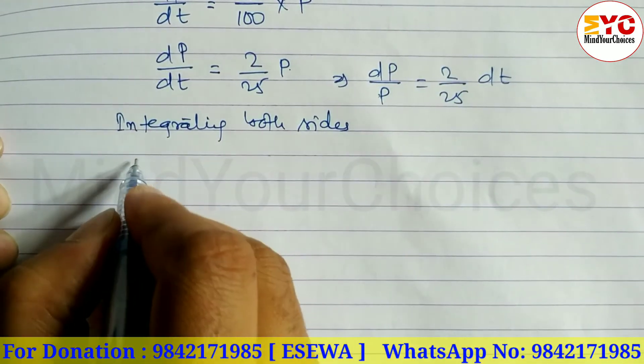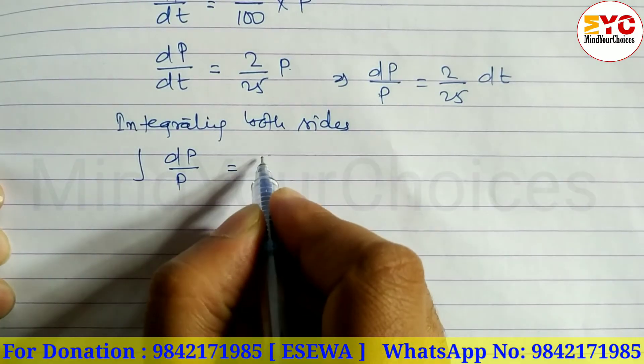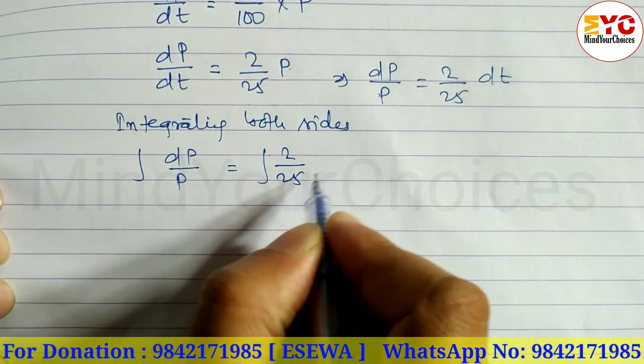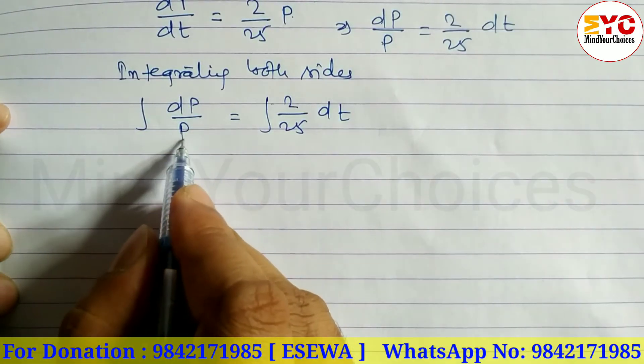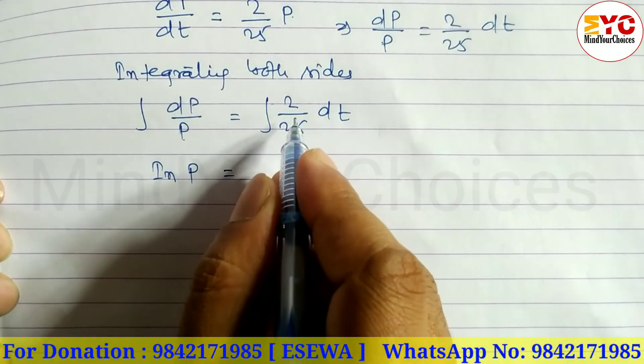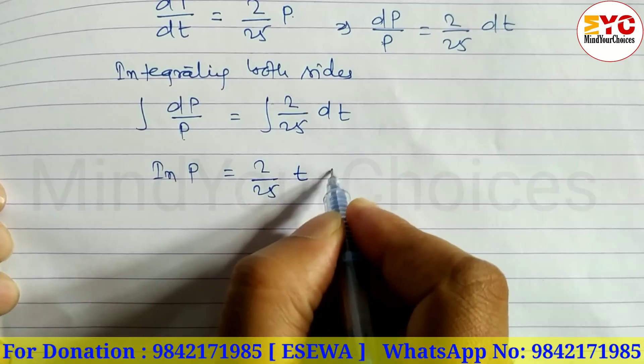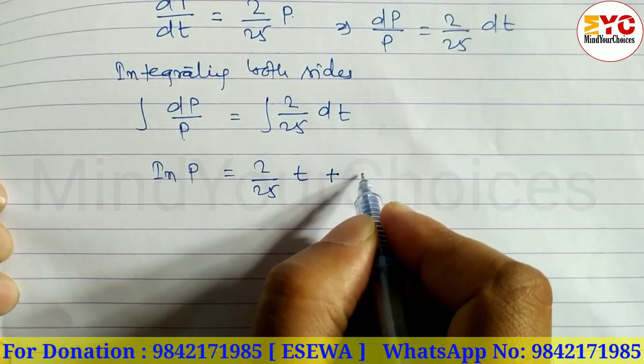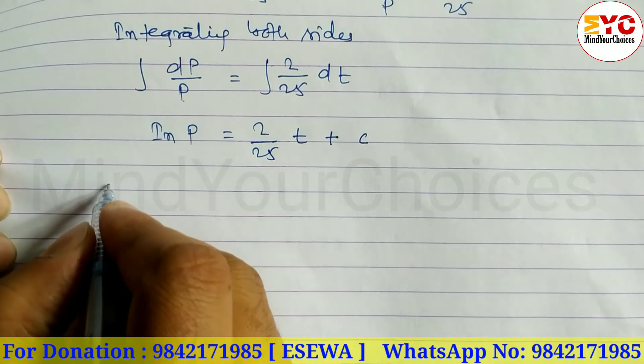Next integrating both sides. So we can write here: integration of dP by P is equal to integration of 2 by 25 dT. Integration of dP by P gives log P. So we can write here log P is equal to 2 by 25 times T plus we can write here C.